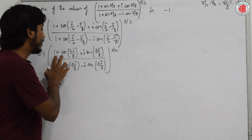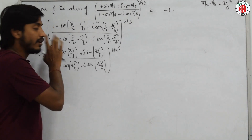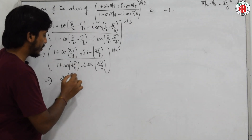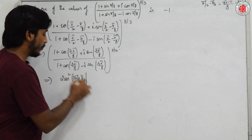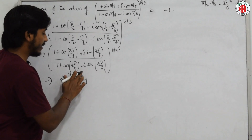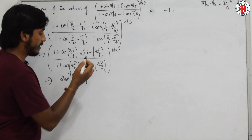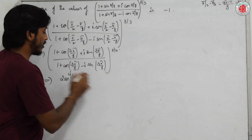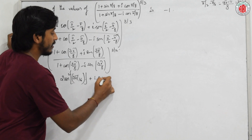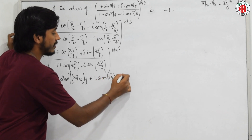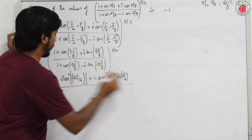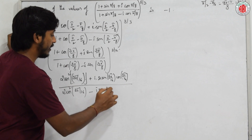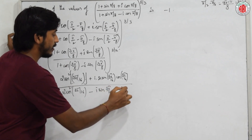We use: 1 + cos θ = 2cos²(θ/2) and sin θ = 2sin(θ/2)cos(θ/2), with θ = 3π/8. The numerator becomes 2cos²(3π/16) + i · 2sin(3π/16)cos(3π/16), and the denominator becomes 2cos²(3π/16) − i · 2sin(3π/16)cos(3π/16), all raised to 8/3.